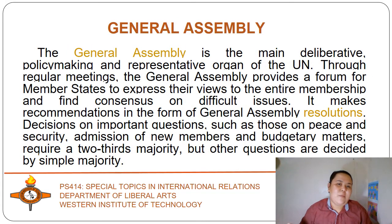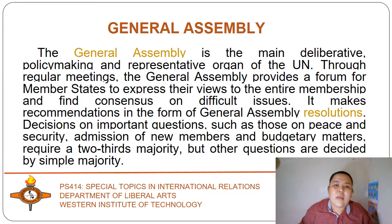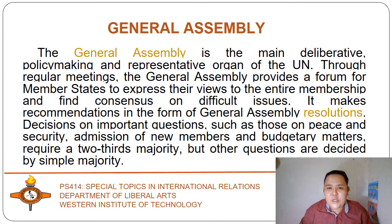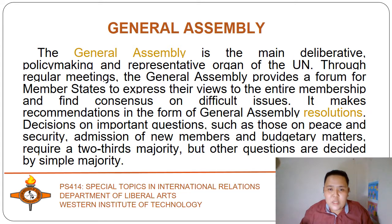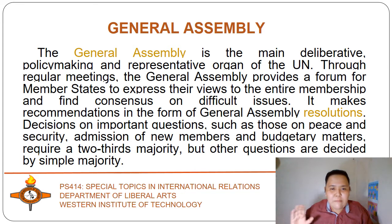The General Assembly is the main deliberative, policymaking, and representative organ of the UN. Through regular meetings, the General Assembly provides a forum for member states to express their views to the entire membership and find consensus on difficult issues. It makes recommendations in the form of General Assembly resolutions. Decisions on important questions, such as those on peace and security, admission of new members, and budgetary matters, require a two-thirds majority, but other questions are decided by simple majority.